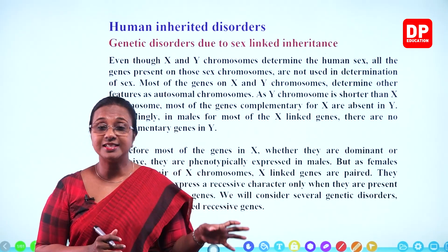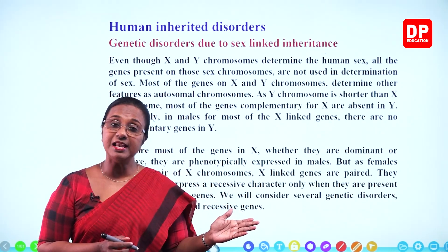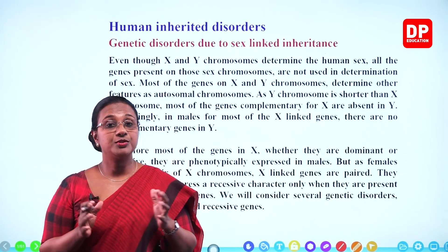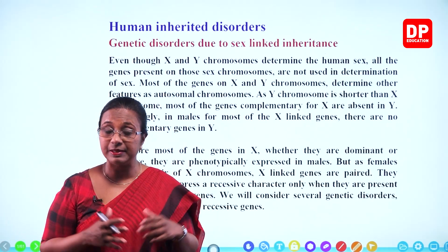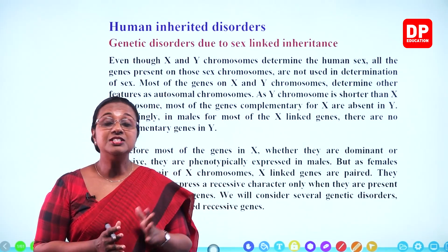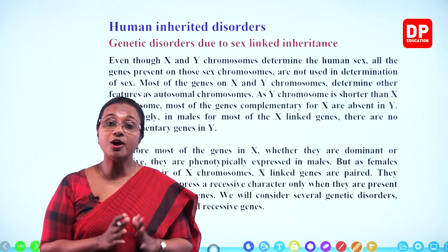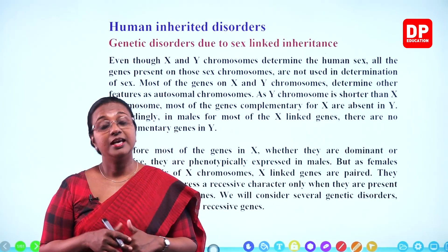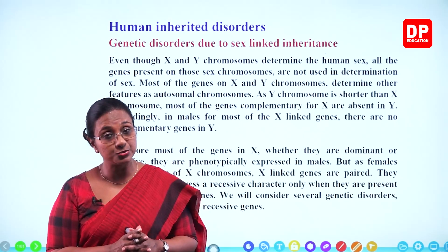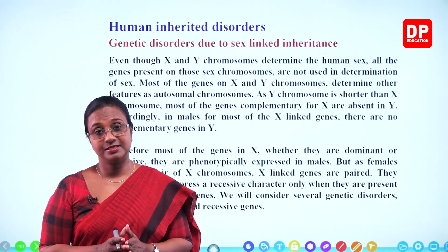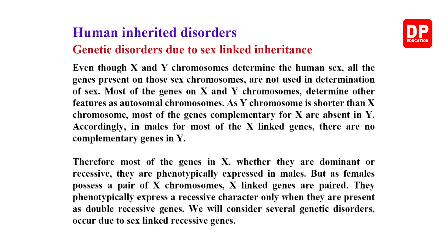The 23rd pair determines sex: XX is female, XY is male. We also saw gene linkage, discovered by Morgan — certain genes do not segregate independently but are linked together and segregate together. Based on all these concepts, we are now going to discuss human inherited disorders.